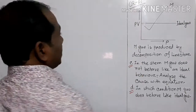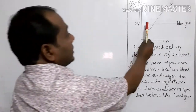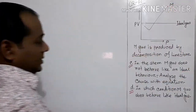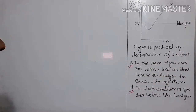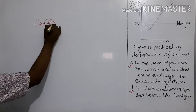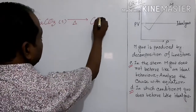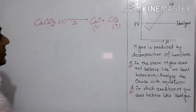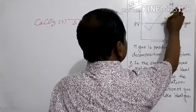CQ number one: a PV versus P graph is given. One line is for ideal gas and another line is for M gas. M gas is produced by decomposition of limestone. Calcium carbonate (limestone) decomposes to give calcium oxide plus carbon dioxide. So M gas is carbon dioxide.